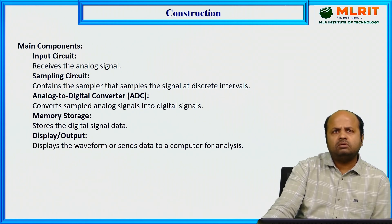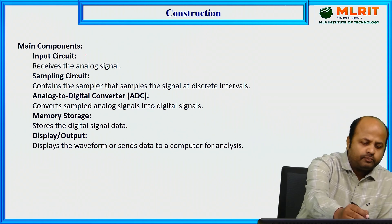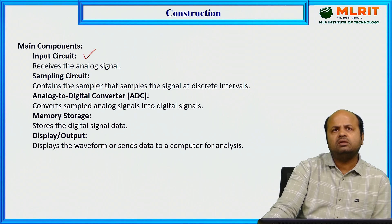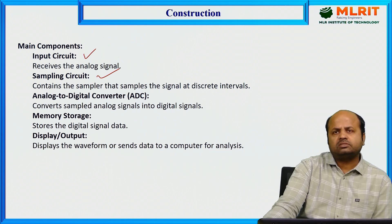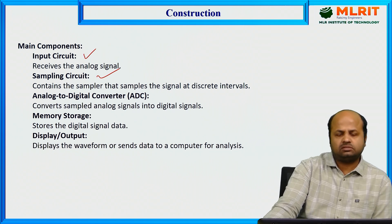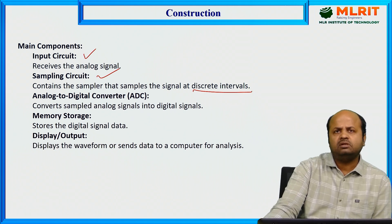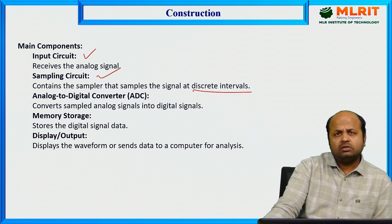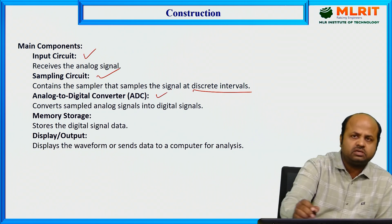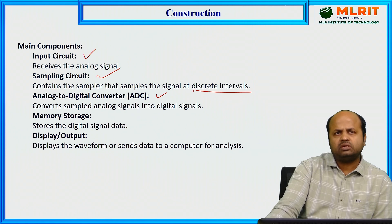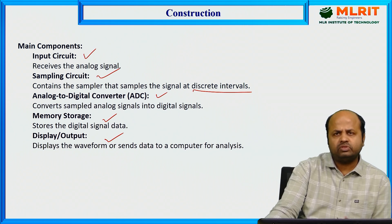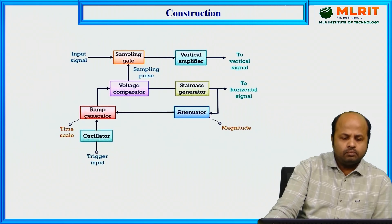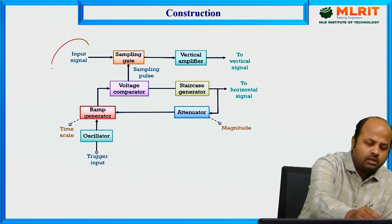What are the main components of a sampling oscilloscope? We have an input circuit that receives the analog signal. The sampling circuit then samples the signal into discrete intervals based on the time division. After that, the sampled signal is converted to digital format, and once converted it can be stored or displayed on the screen. These are the main components of a sampling oscilloscope.